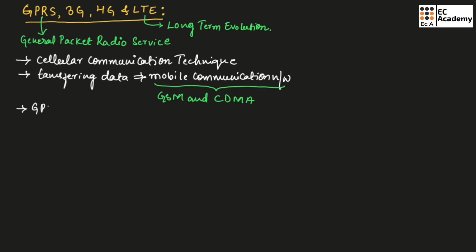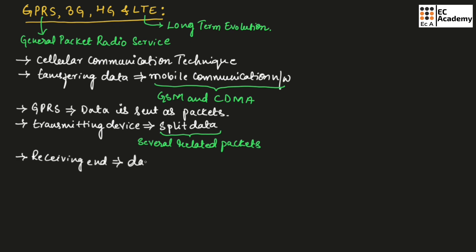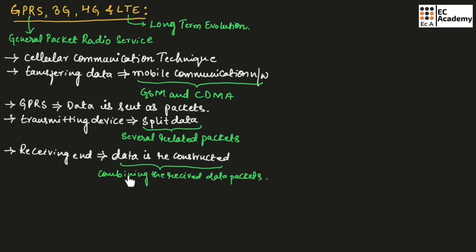In GPRS communication, the data is sent as packets. The transmitting device splits the data into several related packets. At the receiving end, data is reconstructed by combining the received data packets. GPRS supports a maximum transfer rate of 171.2 kbps.